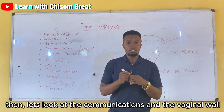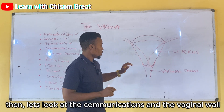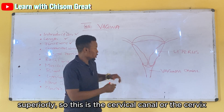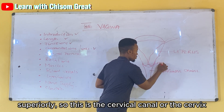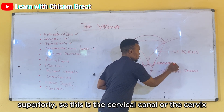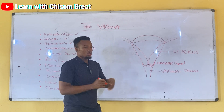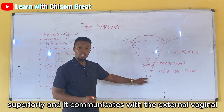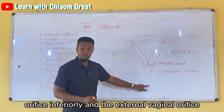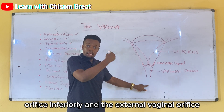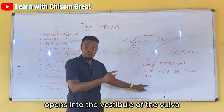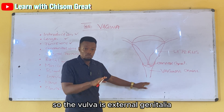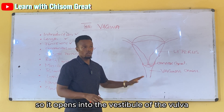The vagina communicates with the cervical canal superiorly. It communicates with the external vaginal orifice inferiorly, and the external vaginal orifice opens into the vestibule of the vulva. The vulva is the external genitalia.